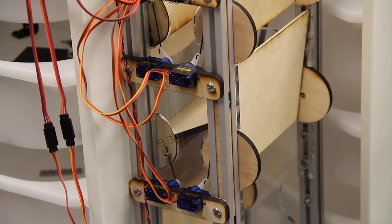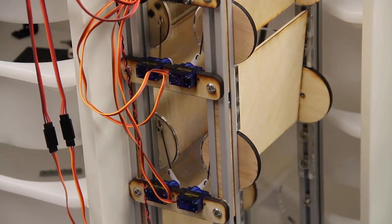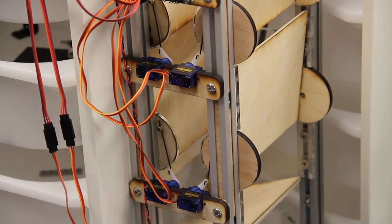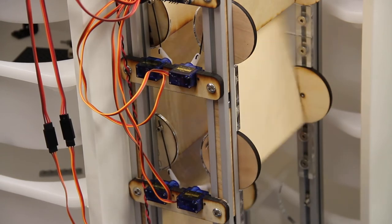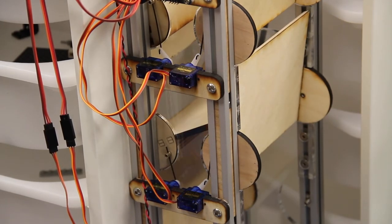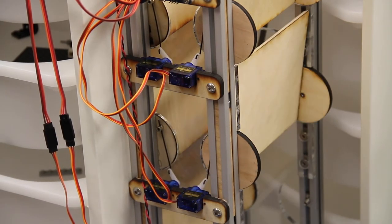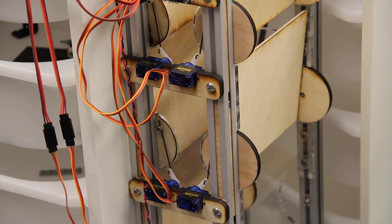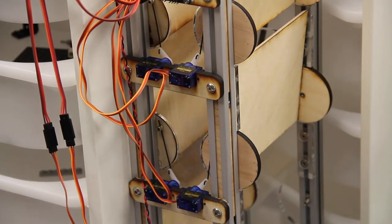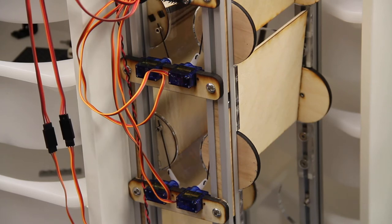On the older prototype you can see the servos mounted on the outside with metal push rods moving the flaps. The servos move 150 degrees to make the flaps move 60 degrees. This improves torque but unfortunately reduces flap speed.